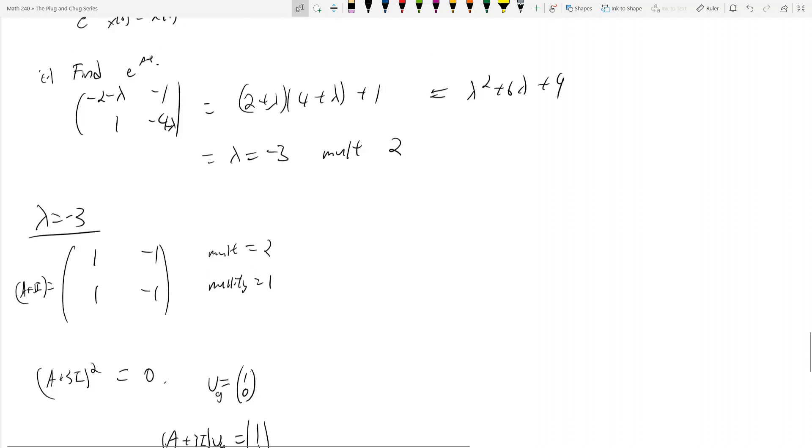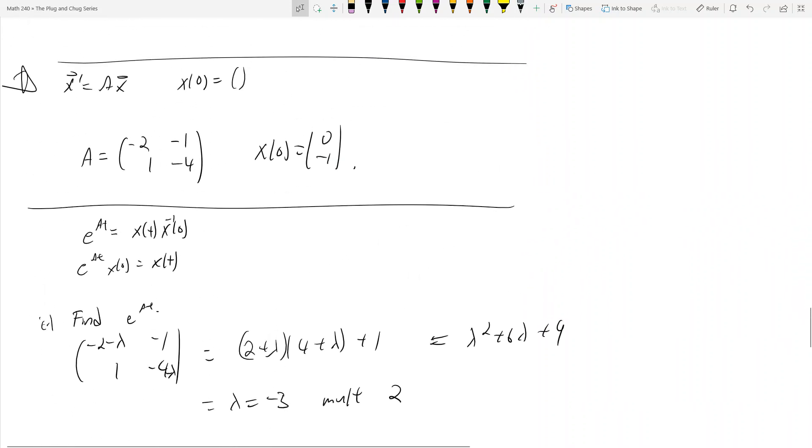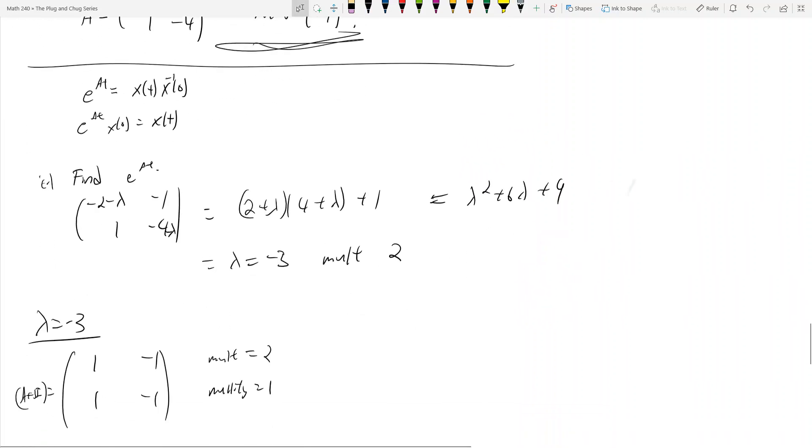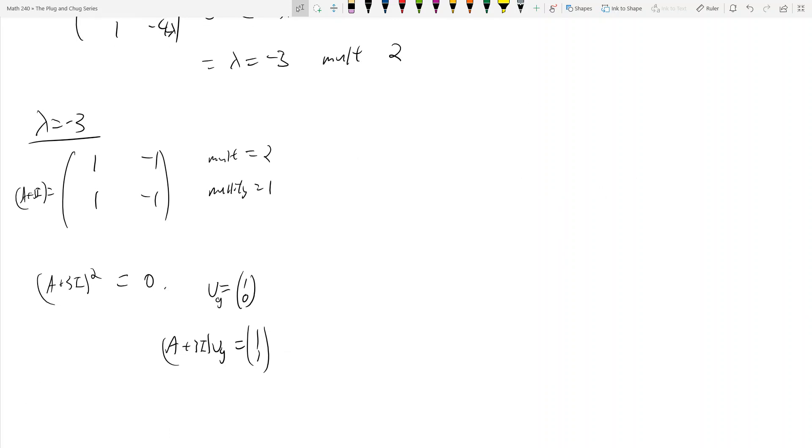This is a quick addendum to the System of Differential Equations video, where we have the initial value condition here. It's the same problem, and the steps are the same all the way up until we find Vg and the generalized eigenvector and the cycle that it generates.